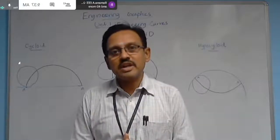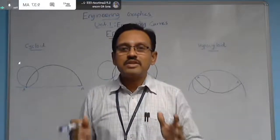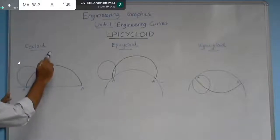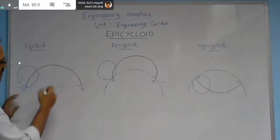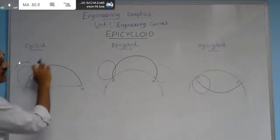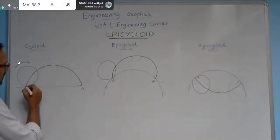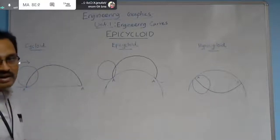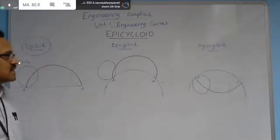In the previous session we discussed how to construct a cycloid. In this class we will go for epicycloid. First, I will briefly explain what is cycloid, epicycloid, and hypocycloid. A cycloid: when a small circle of certain diameter rolls on a flat surface for one complete revolution, any arbitrary point A on the circle traces a path. The path traced by point A for one complete revolution is called a cycloid.